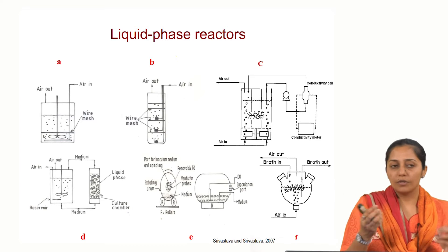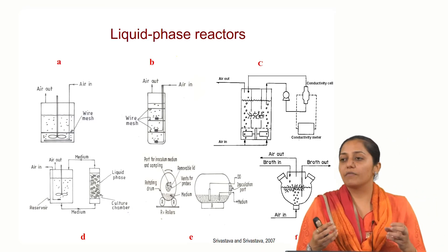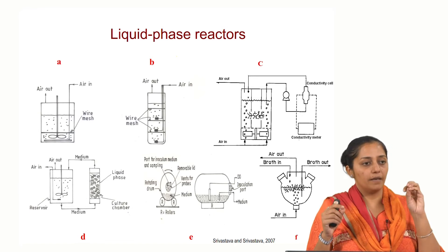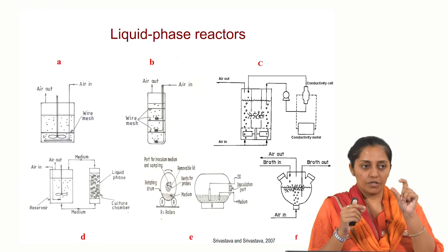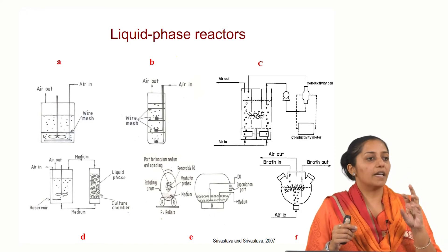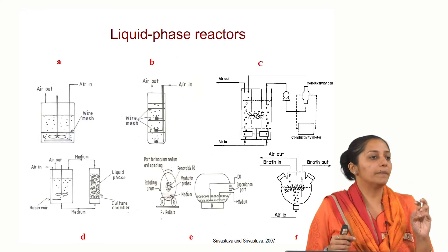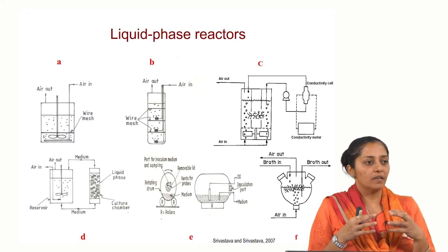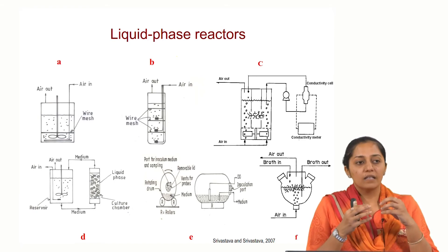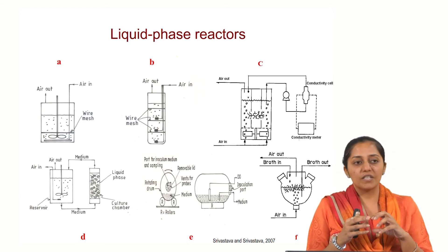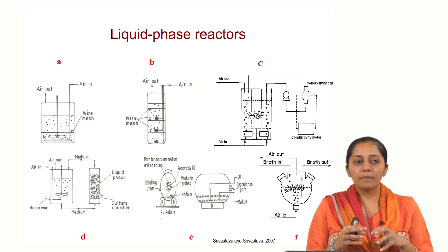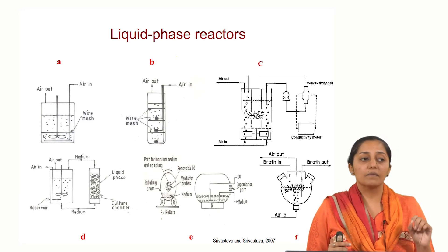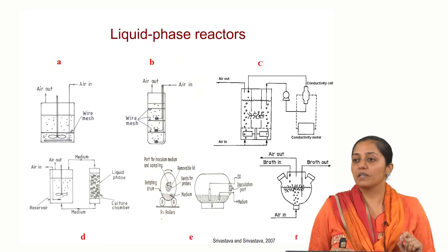Similarly, configurations have been used where small polypropylene mesh baskets are inoculated with roots and then the entire mesh is dropped inside the liquid medium. As the roots grow around the mesh and branching happens, the inner core of the roots within the mesh will not have the same oxygen availability as the outer surface. So these are severe mass transfer challenges in hairy root cultures.